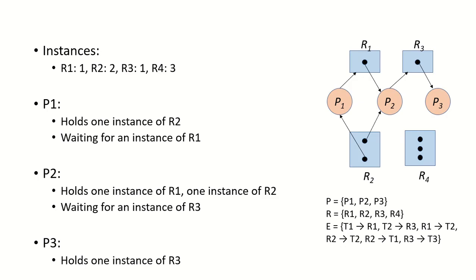Let us take an example. There are three processes P1, P2, P3 shown as circles, and four resources R1, R2, R3, R4 shown as rectangular vertices. Together, processes and resources form the set of vertices — the nodes of this particular graph.